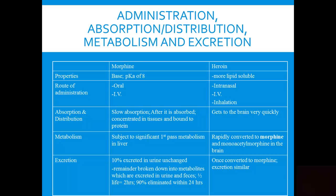I've put everything into a table covering administration, absorption, distribution, metabolism, and excretion for these drugs. Morphine is a weak base with a pKa of about 8, which means it would be easily ionized. Generally it's taken orally, but morphine can also be delivered IV — for example, morphine drips in surgical or medical settings, or in some settings morphine lollipops.